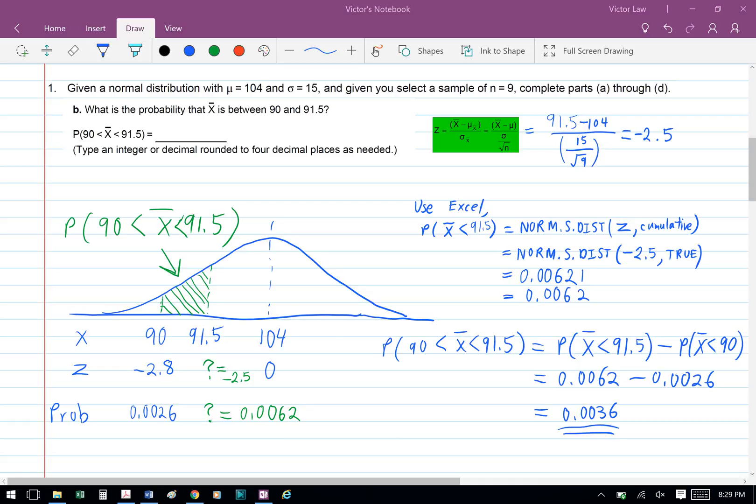Finally, to find the probability that x bar is between 90 and 91.5, we have the probability that x bar is less than 91.5 minus the probability that x bar is less than 90. So we have 0.0062 minus 0.0026, and the answer for part B is 0.0036.